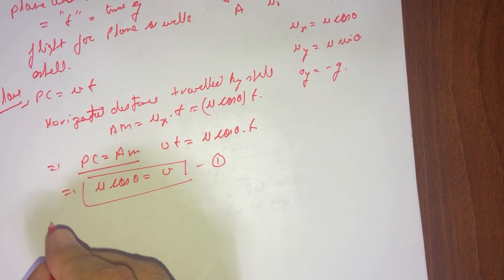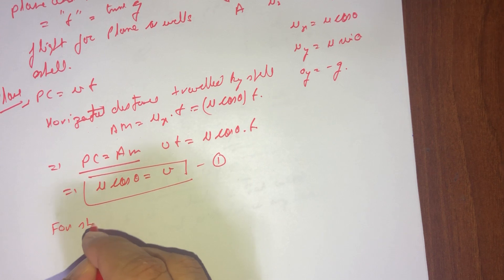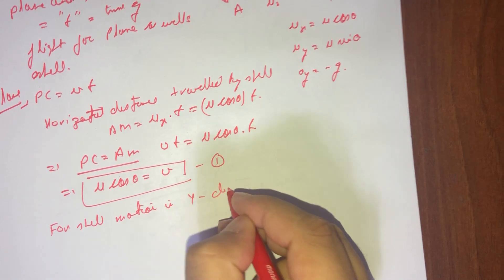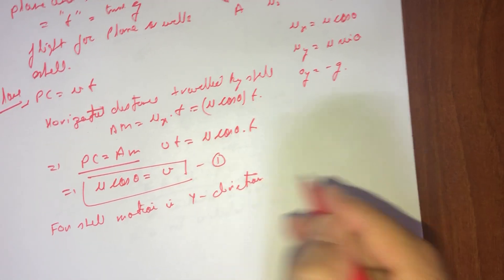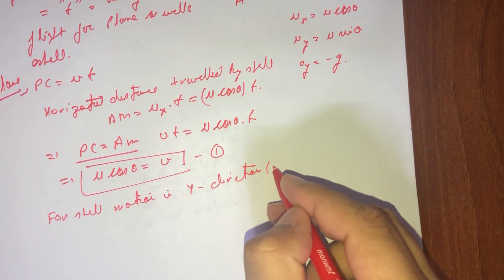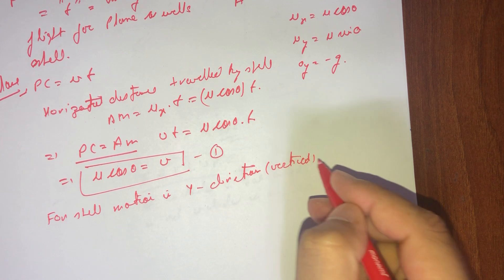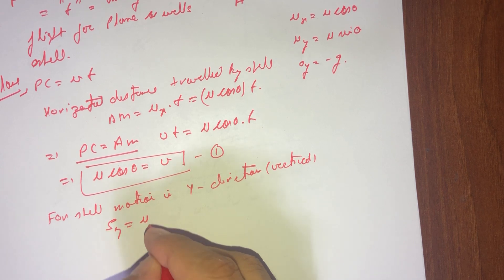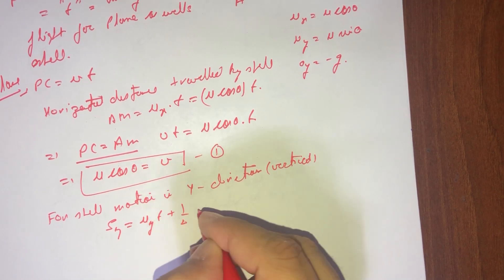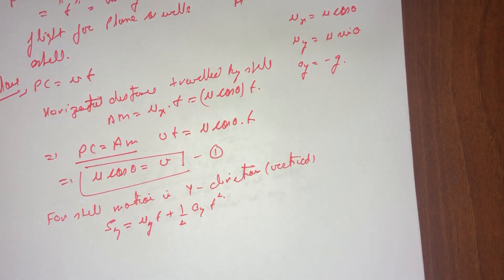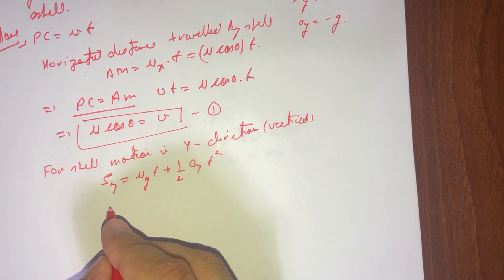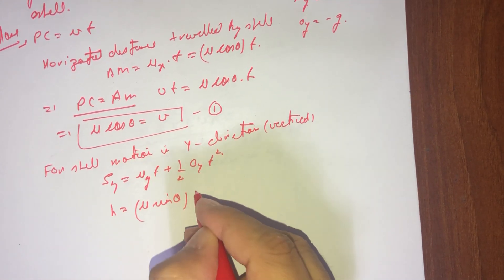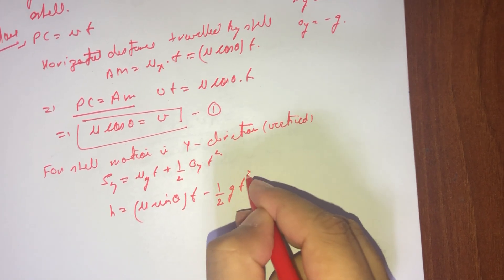For the shell, the motion in the y direction — the vertical motion. We can write that sy = uy·t + ½·ay·t². Here sy is given as h, so h = u·sinθ·t minus ½·g·t².